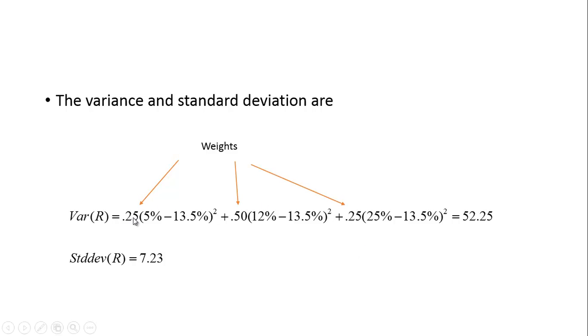So if you do this, you get a variance of 52.25, so lower variance. And if you take the square root of that, you get a standard deviation of 7.23. If you keep in mind that these probabilities are the way we're weighting these observations, then hopefully you won't also think to divide by n or n minus 1.